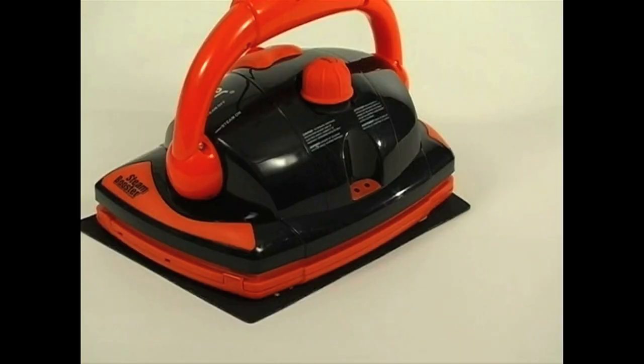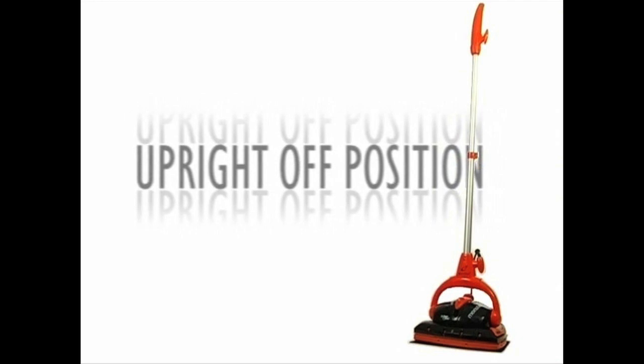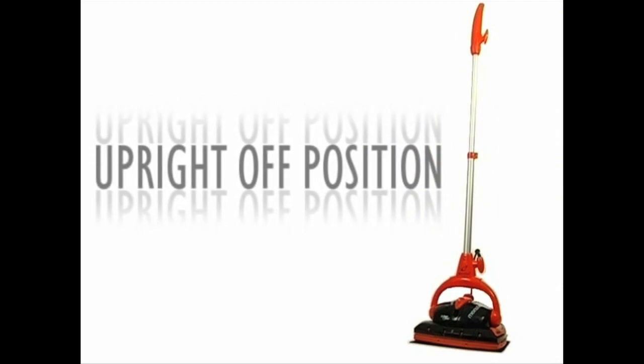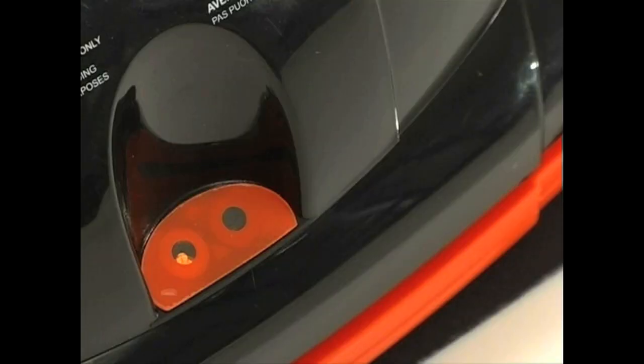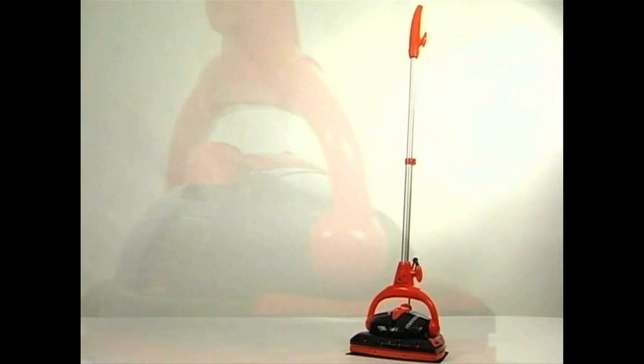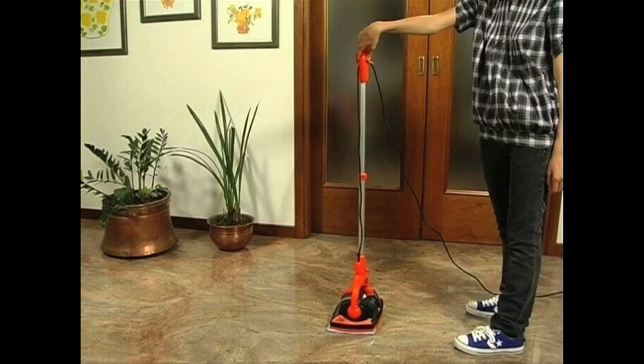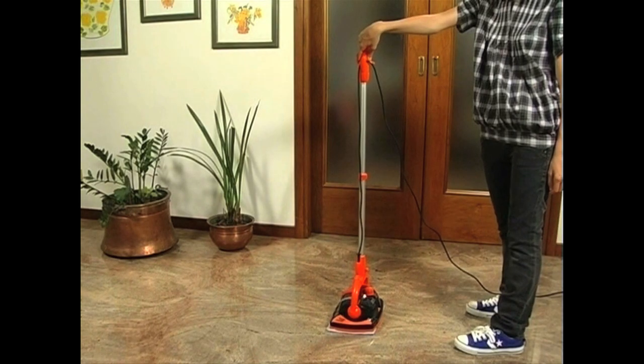Plug the unit in a wall socket. Orange power indicator light will illuminate. Keep the handle in the upright off position. Wait until the green steam ready indicator light illuminates. Once boiler is filled and the green steam ready indicator light illuminates, the floor steamer is ready to clean.